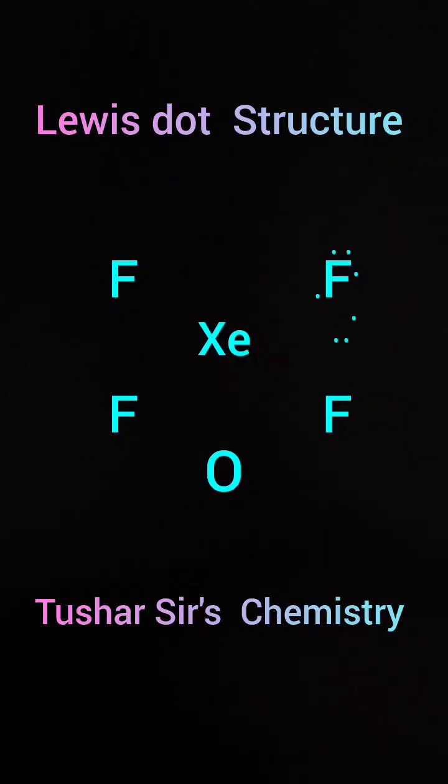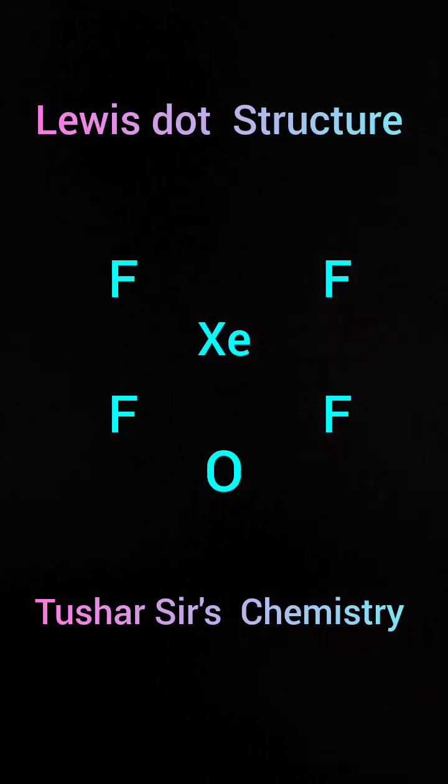Each fluorine has 7 valence electrons because its atomic number is 9. So each fluorine needs one electron to attain octet. As they need one electron, each fluorine will show one dot to xenon and other six dots will remain away from xenon.